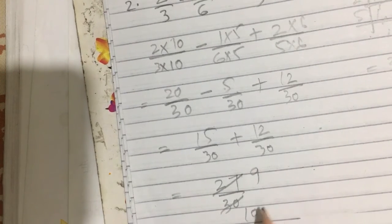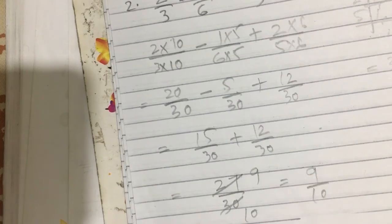3 nines are 27, 3 tens are 30. So this is 9 by 10. 9 by 10 is the answer.